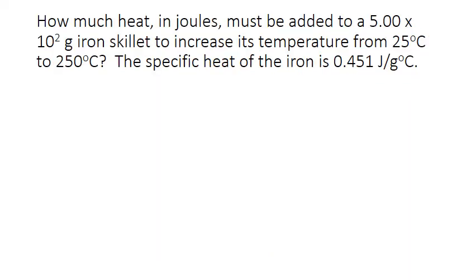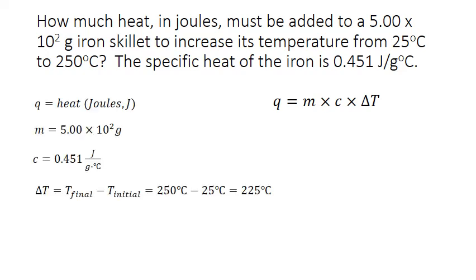So let's apply the heat capacity formula to this situation. How much heat in joules must be added to a 500 gram iron skillet to increase its temperature from 25 degrees Celsius to 250 degrees Celsius? Knowing that the specific heat of the iron is 0.451 joules per gram degree Celsius. We'll use the heat capacity formula. Q equals M times C times delta T. Let's identify all of our variables. So we're solving for Q, which is heat. Our mass of the skillet is 500 grams or 5.00 times 10 to the second in scientific notation. Specific heat of the iron is 0.451 joules per gram degree Celsius.